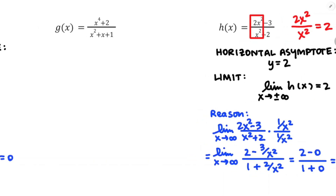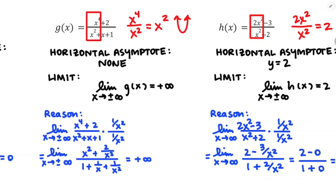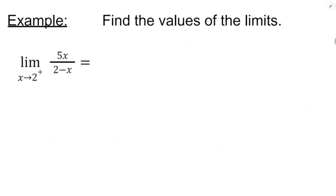For the middle function g of x, the power on top exceeds the power on bottom — x to the 4 plus 2 grows faster than x squared plus x plus 1 — so this one won't have a horizontal asymptote. In AP Precal we might have been asked about the actual limits as x approaches positive or negative infinity, dividing the leading terms to see it was x squared, showing a parabola. But I don't think that's necessary for this course.